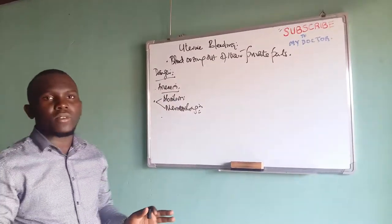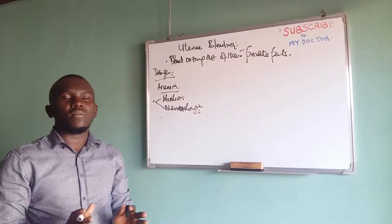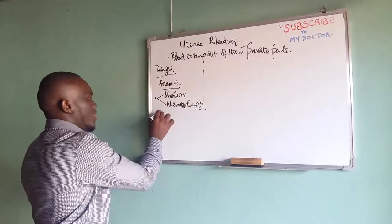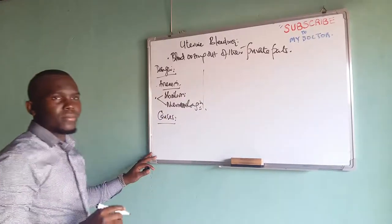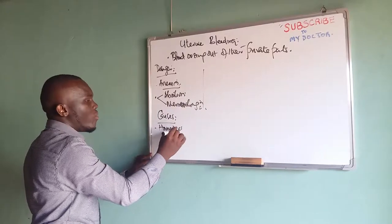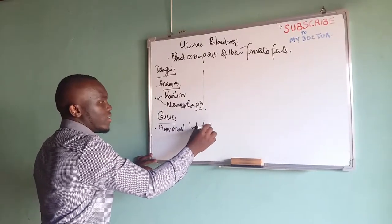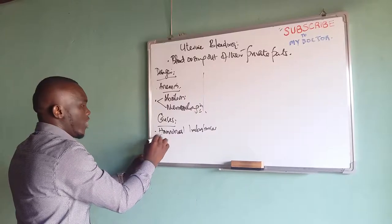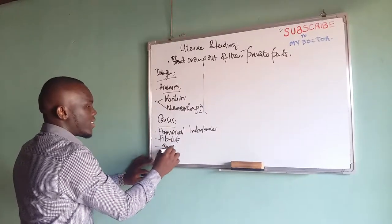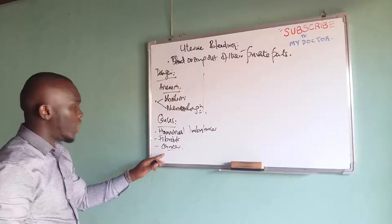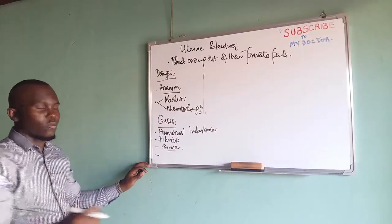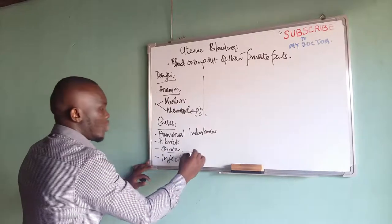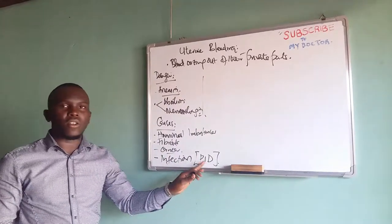It could also be any form of abnormal bleeding. What are the likely causes of the problem? Most people attach it to hormonal imbalances — yes, this is a very common cause. But it could also be due to fibroids, or because of cancer of the uterus. It could also be because of infection — specifically what we call PID, pelvic inflammatory disease.